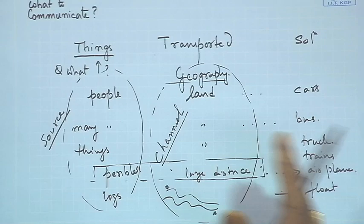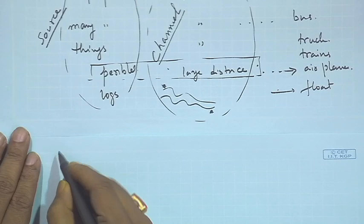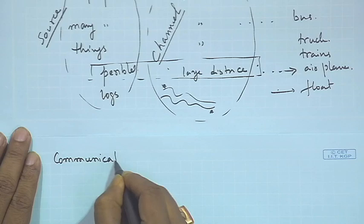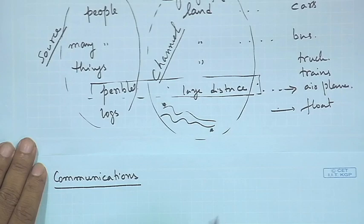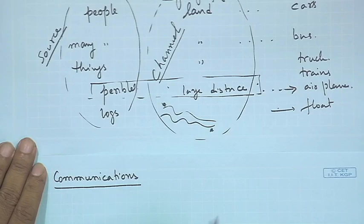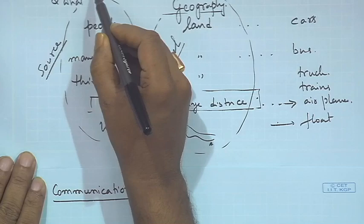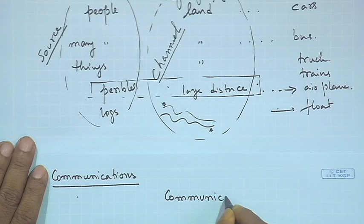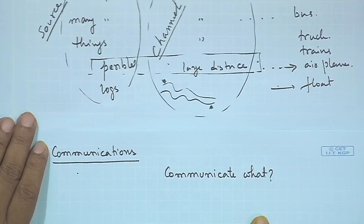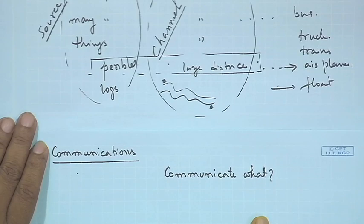If we are asking a question related to communications: what is to be communicated? You can say information — that is a pretty right answer — but then how do we define what we mean by information? That is an important question, and we have to go back to how things were handled years back.